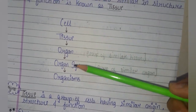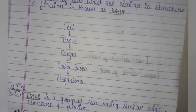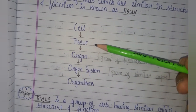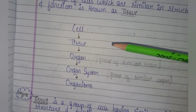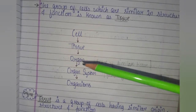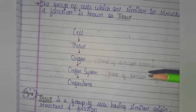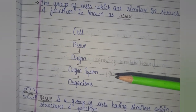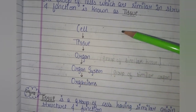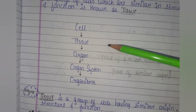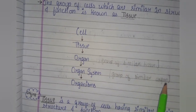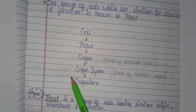This is a very important table. Group of cells similar in structure and function make tissues. Group of tissues similar in structure and function make an organ. Group of similar organs makes an organ system, and a group of organ systems makes an organism.